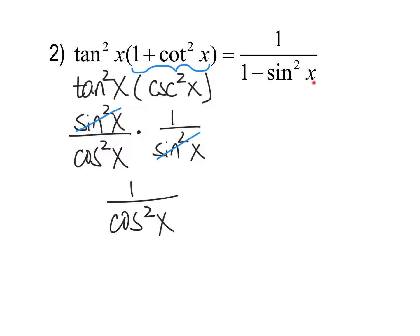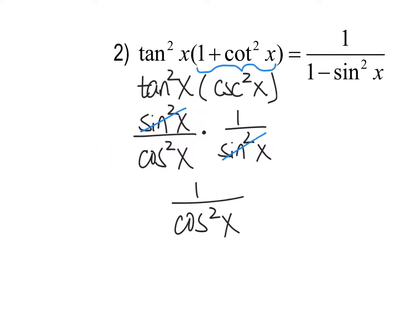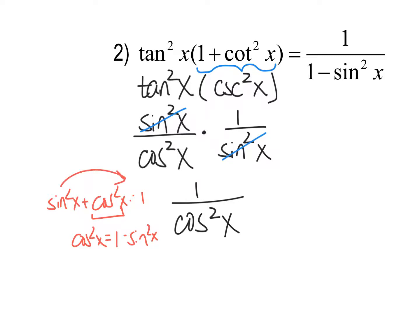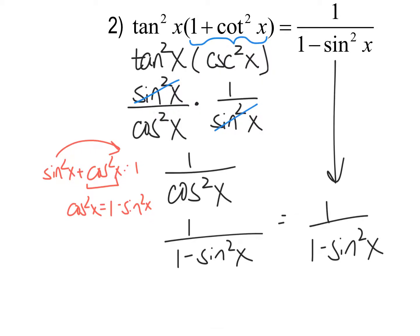Keeping in mind that my goal is to get the left-hand side to match the right-hand side, I have one on top — that's good. But one over cosine squared is probably another Pythagorean identity. Remember you can rearrange sine squared plus cosine squared equals one. If I want cosine squared by itself, I can work that out on the side: cosine squared equals one minus sine squared x. So I can rewrite cosine squared x as one minus sine squared x, and now it equals the right-hand side.